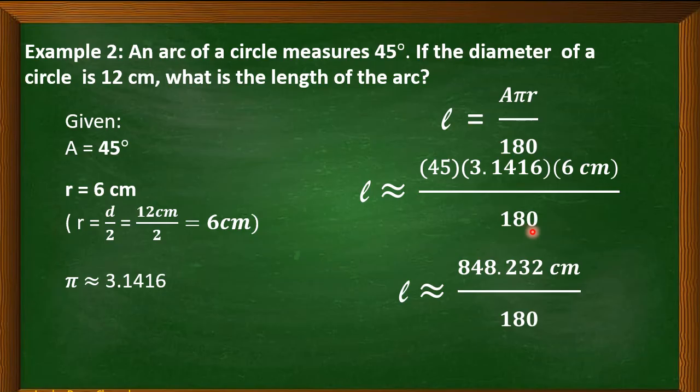Then, divide by 180. So, we have the approximate value of 4.71 cm. We will just round our final answer up to 2 decimal places or in the hundredths place.